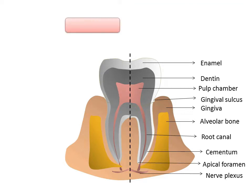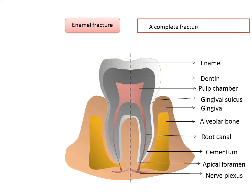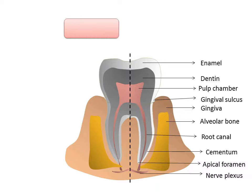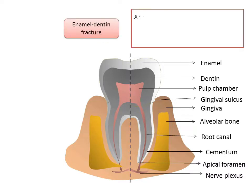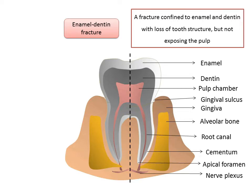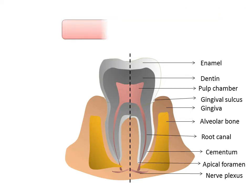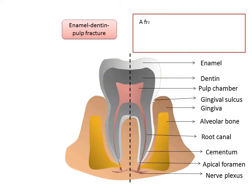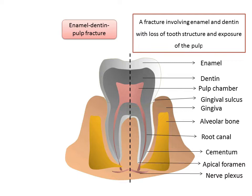Enamel fracture is a complete fracture of the enamel wherein there is loss of enamel but no visible sign of exposed dentine. Enamel-dentine fracture is a fracture confined to enamel and dentine with loss of tooth structure but not exposing the pulp. Enamel-dentine-pulp fracture is a fracture involving enamel and dentine along with loss of tooth structure and exposure of the pulp.